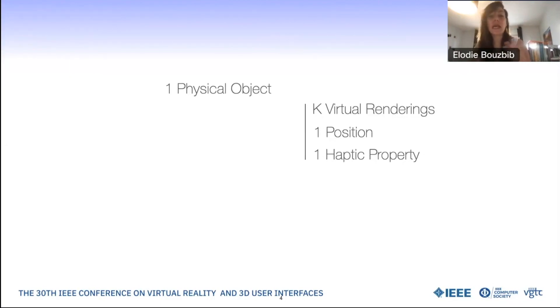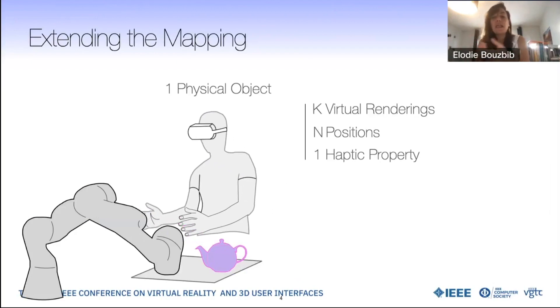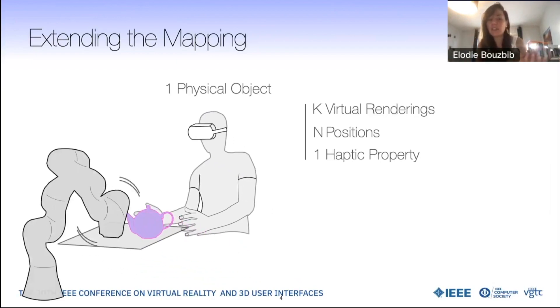Though, it is a little counterproductive to replicate every single environment, right? To make it more versatile, we can extend this mapping. We can therefore have robotic interfaces displacing one physical object to overlay n virtual object positions. But even here, the user would still perceive the same single haptic property of the c-pod. How to change this into m haptic properties?